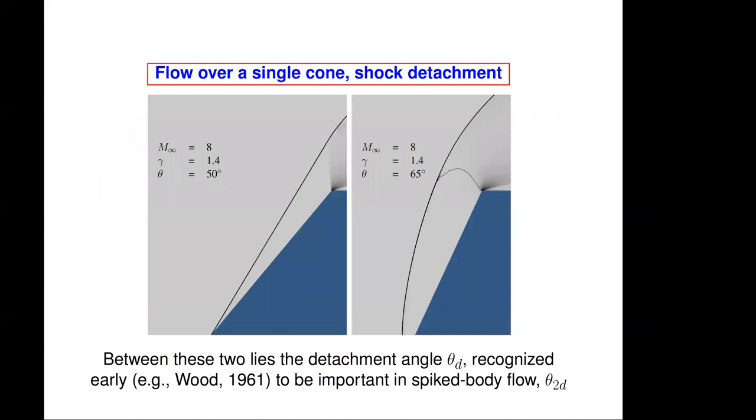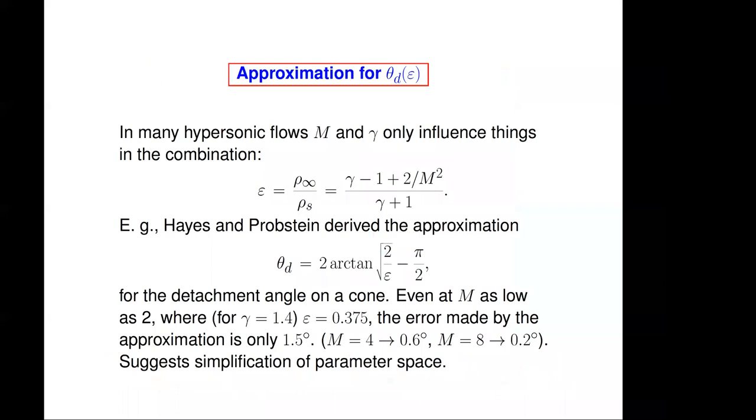But first let me introduce the detachment angle of a cone. If we take a single cone at hypersonic Mach number eight, let's say gamma 1.4 and an angle 50 degrees, then we get a straight attached shock with supersonic flow downstream of it. But if we increase the angle, let's say to 65 degrees, then we get a detached bow shock, which is curved and downstream of which the flow is subsonic. Here is the sonic line. And so in between these two angles, there is something called the detachment angle, which I call theta D and which was recognized by David Wood to be important in spiked body flow, which is called theta 2D here.